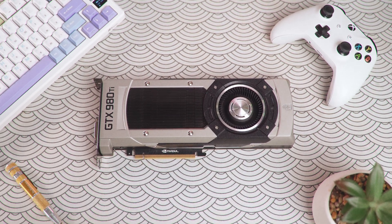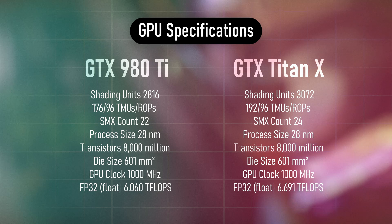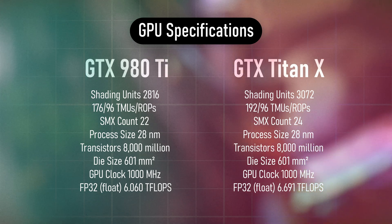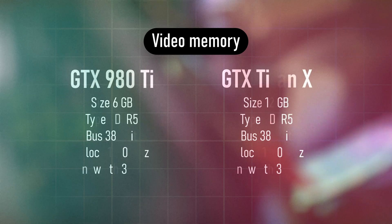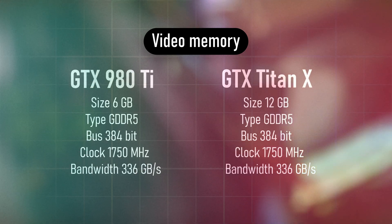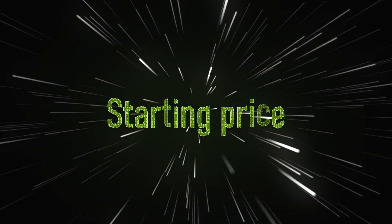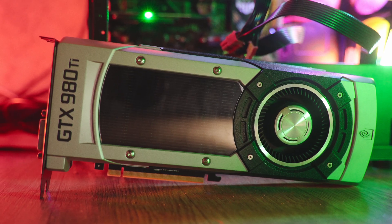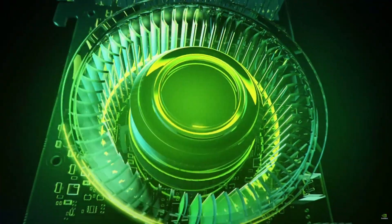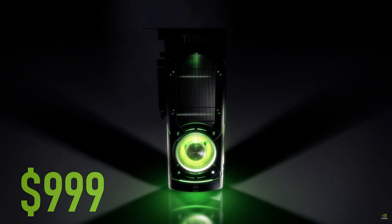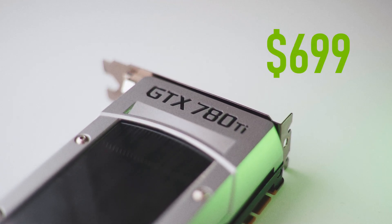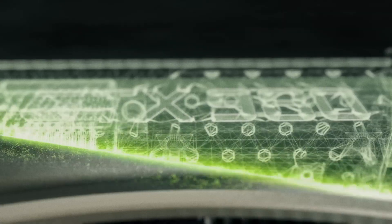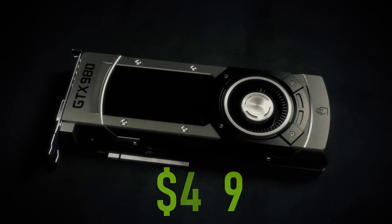The 980Ti is based on the 28nm GM200 chip, making it a slightly cut-down GTX Titan X with about 9% fewer CUDA cores and half the VRAM at 6GB of GDDR5 instead of 12GB. Both frequency and memory bus remained the same, so the TDP is also identical. Nvidia priced the 980Ti at $649, while the Titan X was $999 — a reduction from the previous-gen GTX 780Ti that launched at $699. The regular GTX 980 also received a price cut from $549 to $499.